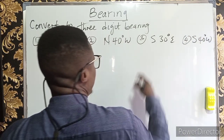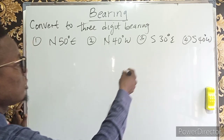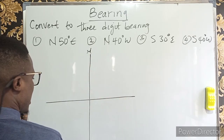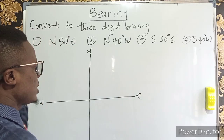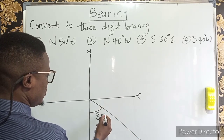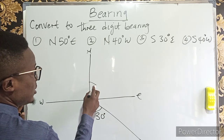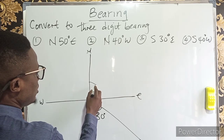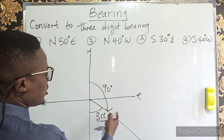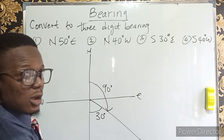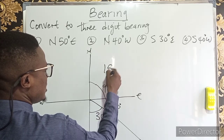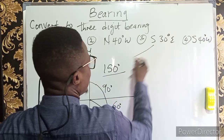For 30 degrees east of south: draw the cardinal point. Southeast is in the second quadrant from south. Attach the 30 degrees to the south. Beginning from the north and turning clockwise, the first quadrant is 90 degrees. To find the second quadrant portion: 90 minus 30 equals 60 degrees. So the required value is 90 plus 60 equals 150 degrees in three-digit bearing. These two are equivalent.